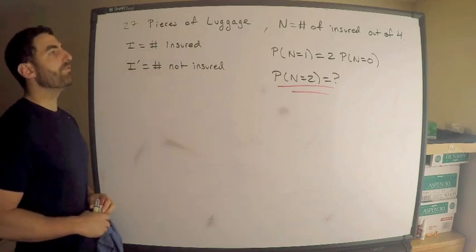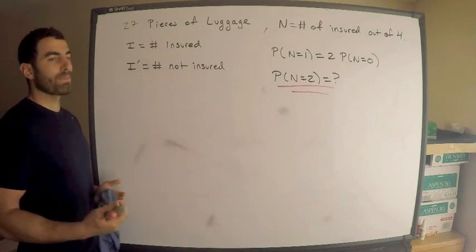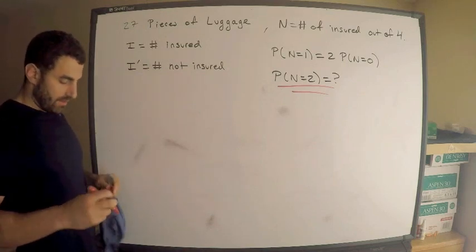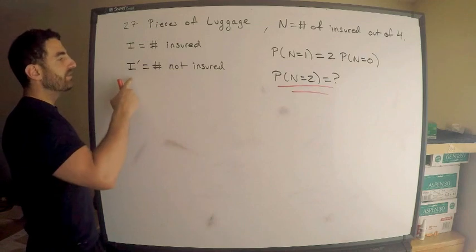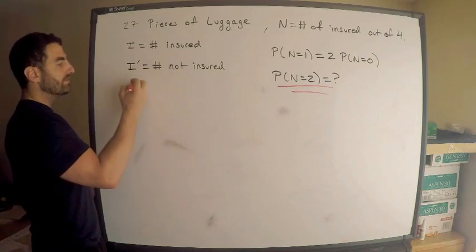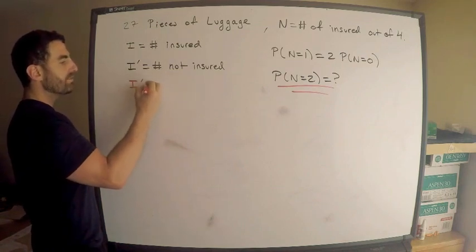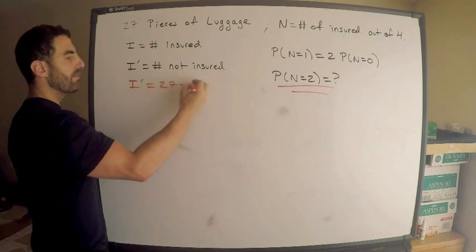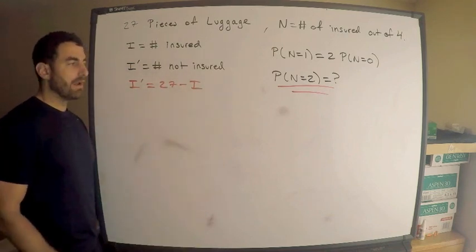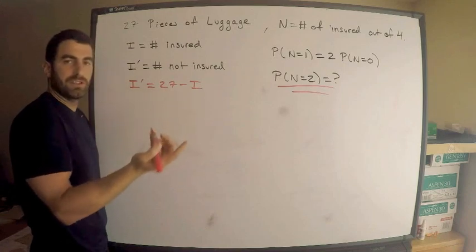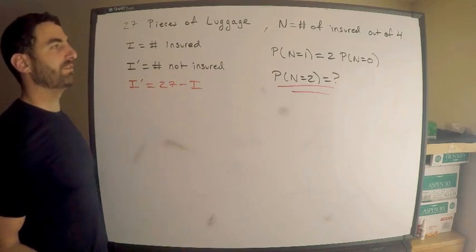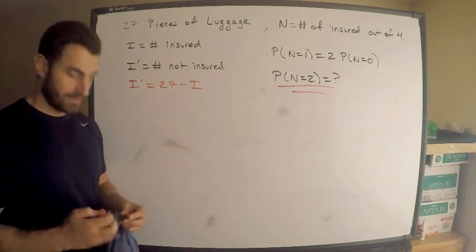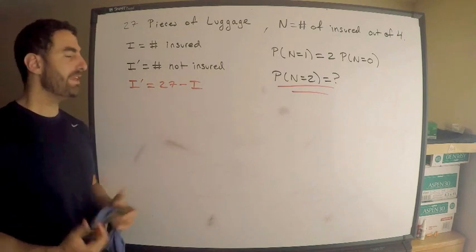Let's just let I be the number that are insured. The complement of I, of course, are the ones that are not insured. We do know the following, though. Think about this for a second. I don't know how many are insured, but how many are not insured? This right here might as well just call this 27 minus I. However many there are insured, the rest of them are uninsured. You're either insured or uninsured, assuming you're luggage.